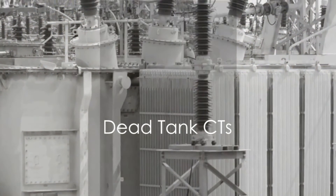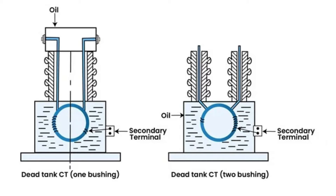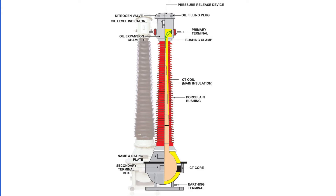Now let's consider dead tank CTs. In this case, the core and secondary winding are housed in the bottom tank, which is earthed or dead. The primary winding is brought down to the bottom tank and insulated from the earthed tank and cores. This design, however, presents a challenge, as it's difficult to apply the predefined insulation over the primary because it needs to pass through the wound cores.